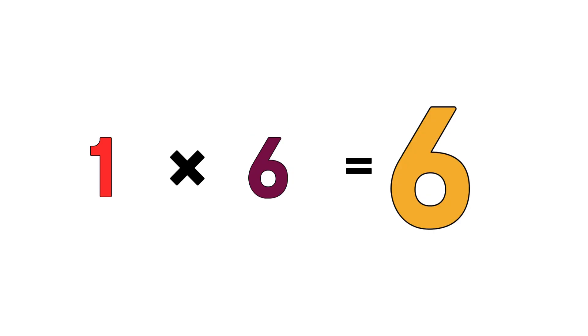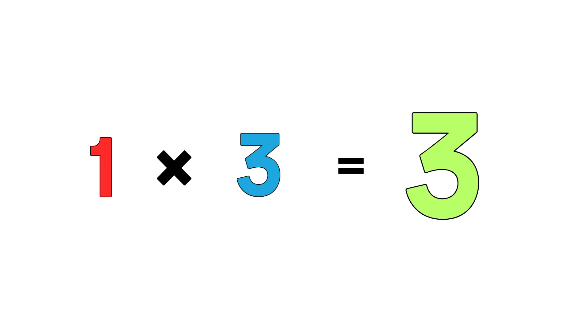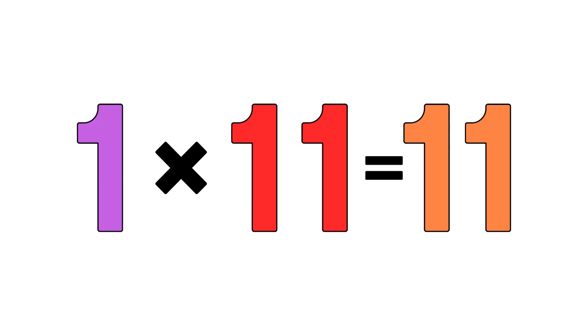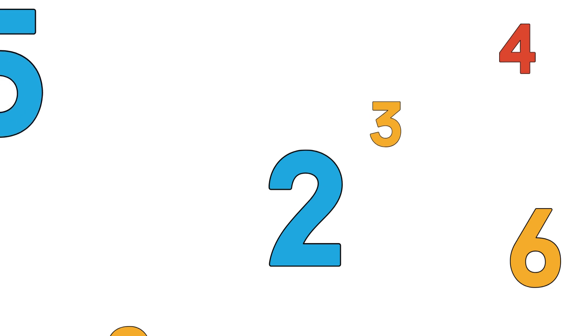Clop, clop, clop, clop. It's the one times table, let's count it all the way. One times eleven is eleven, we're learning as we play. One times twelve is twelve, the last one on our list. We sung the one times table, let's give ourselves a twist.